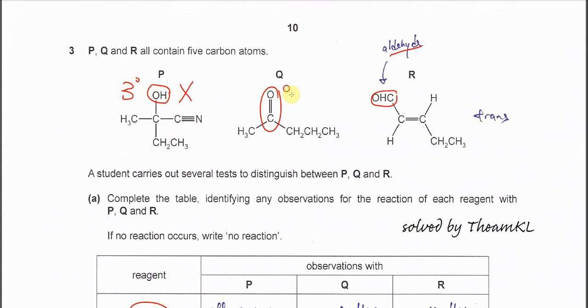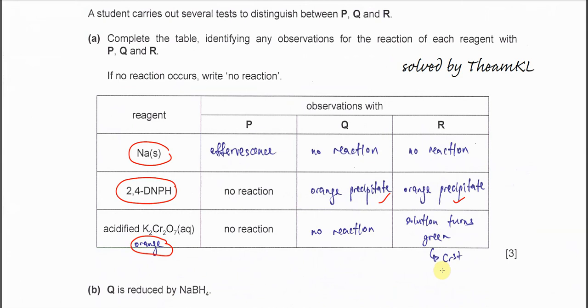Q is a ketone, cannot be oxidized. R has this aldehyde. It can be oxidized. So therefore R will turn the orange to green color, means it reduces the dichromate to positive 3, chromium precipitate. For Q, cannot be oxidized, no reaction. R will turn the orange solution green. The green color is the chromium precipitate.